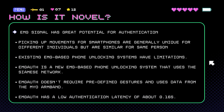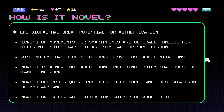How is it novel? Previous works using EMG signals to unlock phones require predefined gestures and specific arm placement, limiting their applicability. EMG Auth proposes a new EMG-based smartphone unlocking system that does not require predefined gestures and uses the Siamese network. EMG Auth uses data collected from the Myo armband and allows for unlocking when picking up and watching the phone.